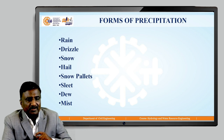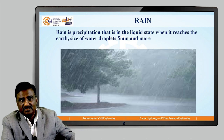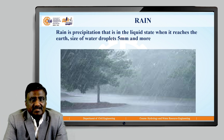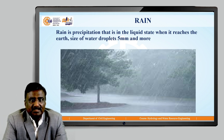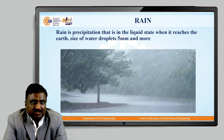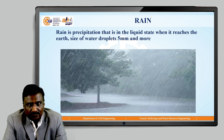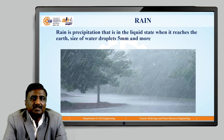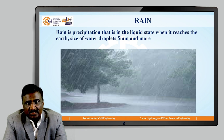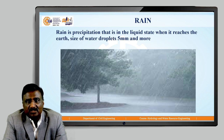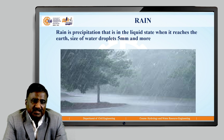Now we will see one by one what exactly each form means. Rain is the precipitation that is in the liquid state when it reaches the earth. The size of water droplets is 5 mm and more. You can see in the image the water droplets falling to the earth surface in the form of rain, with droplet sizes of 5 mm and more.